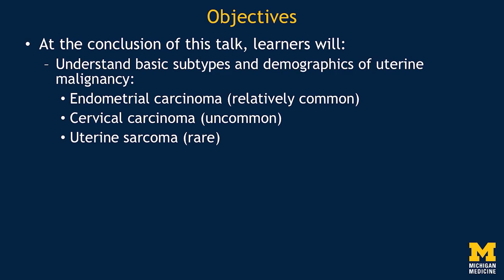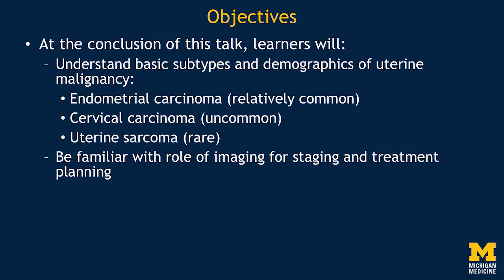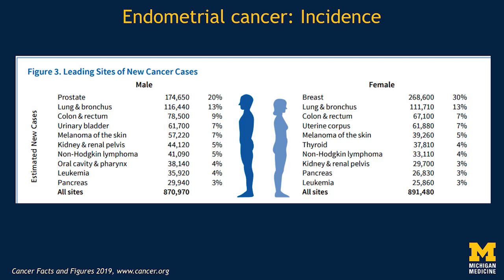My objectives today are that at the conclusion of the talk, learners will understand basic subtypes and demographics of uterine malignancy, including endometrial carcinoma, which is by far the most common; cervical carcinoma, which is relatively less common; and uterine sarcoma, which is rare. I'll spend time on them according to their prevalence. Learners will be familiar with the role of imaging for staging and treatment planning, and will recognize important patterns of disease spread and recurrence.